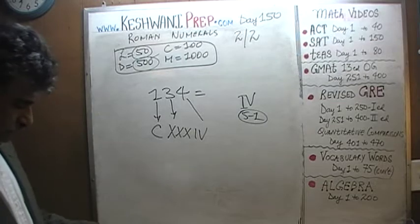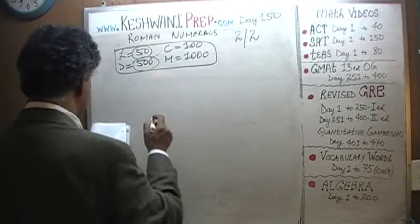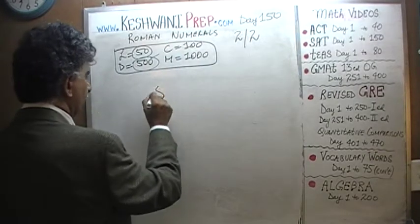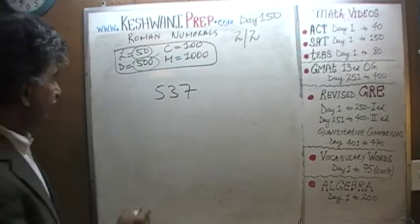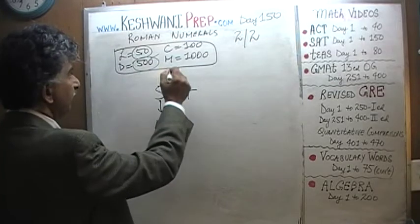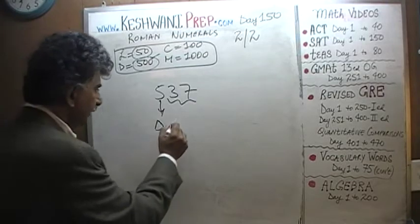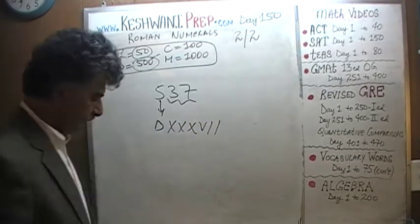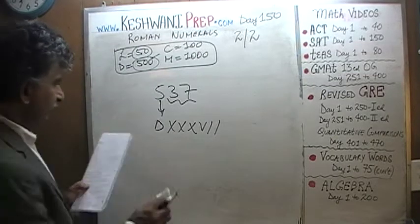How about five hundred and thirty-seven? Five hundred is half a millennium — that's D, for demi. Five hundred, and then thirty-seven: 10 plus 10 plus 10 is thirty, and then 5 plus 1 plus 1 is seven. So five hundred and thirty-seven.